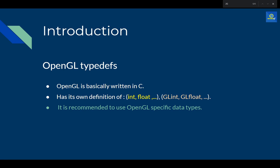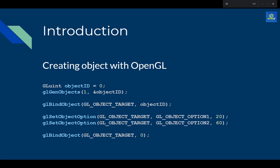OpenGL is essentially a set of variables that define how it should operate, and that set of variables is referred to as the context. That's why you can't draw anything without an OpenGL context. OpenGL also defines typedefs for standard C types — like GLint and GLfloat — where you just put 'GL' in front of the standard name. It's recommended to use these OpenGL typedefs because they handle multi-platform differences in type representation.